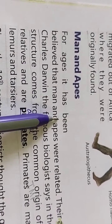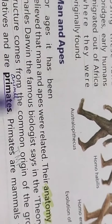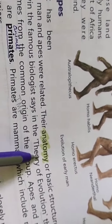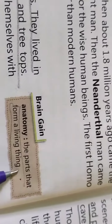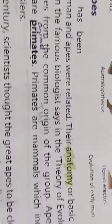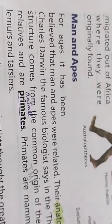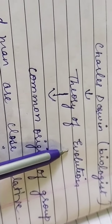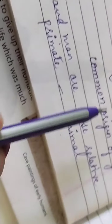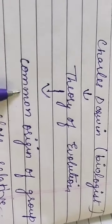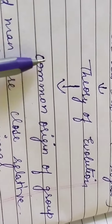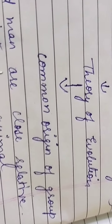Now comes the theory with man and apes. For ages, we believed that man and ape were related to each other because of their basic structure — anatomy means basic structure. We were believing that they both are the same. Then comes Charles Darwin, who was a biologist. He gave a theory of evolution, in which he told that this basic structure comes from a common origin — man was belonging to that common group, the ape common group.